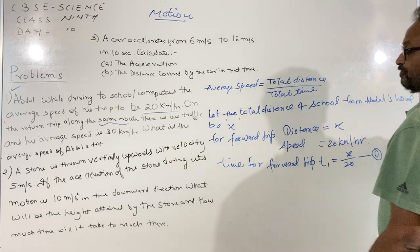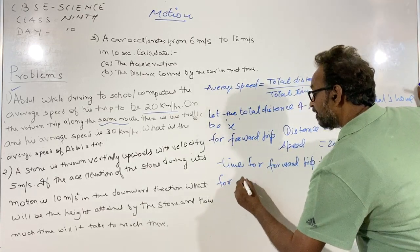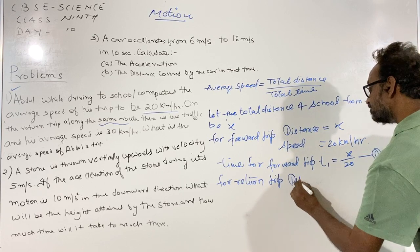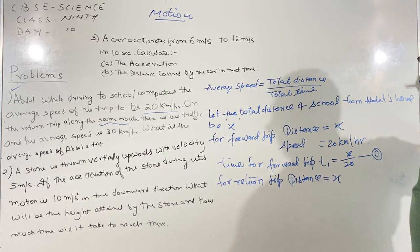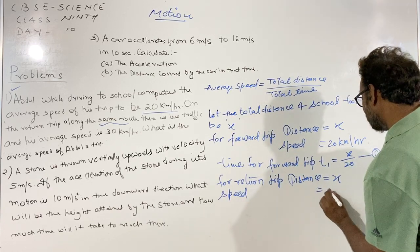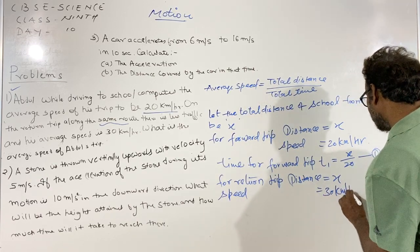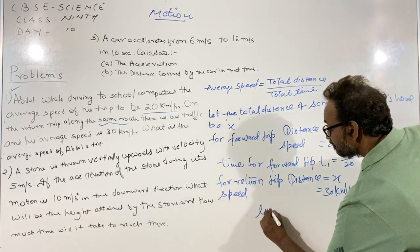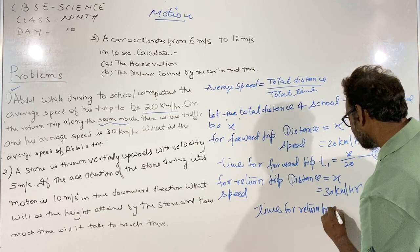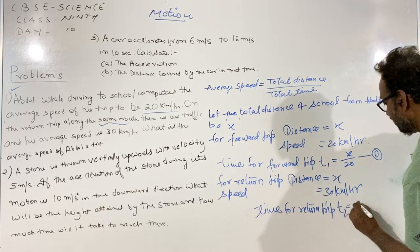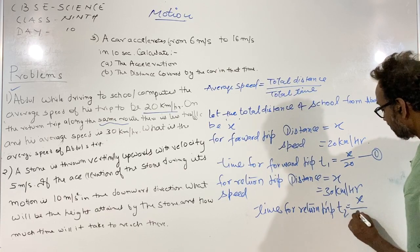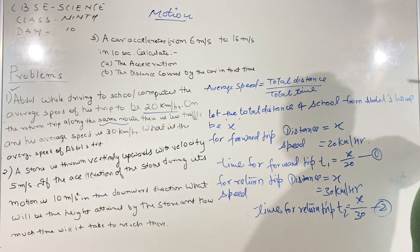In the same way, for the return trip, distance is the same, that is x, and speed is given as 30 km per hour. So time for the return trip, T2, is equal to x over 30.